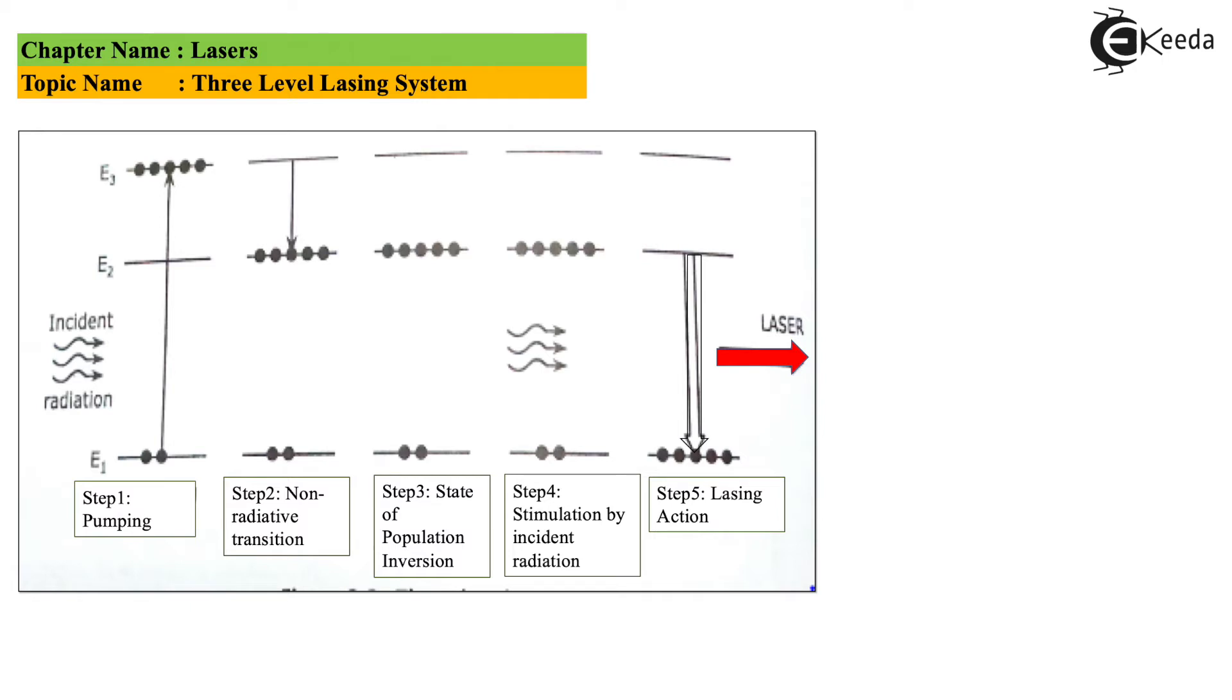But when they make this particular transition, you have coherent photons that are being emitted, and these coherent, monochromatic photons will actually give rise to a high intensity laser. So this is how a three-level system will actually function for lasing action to occur.